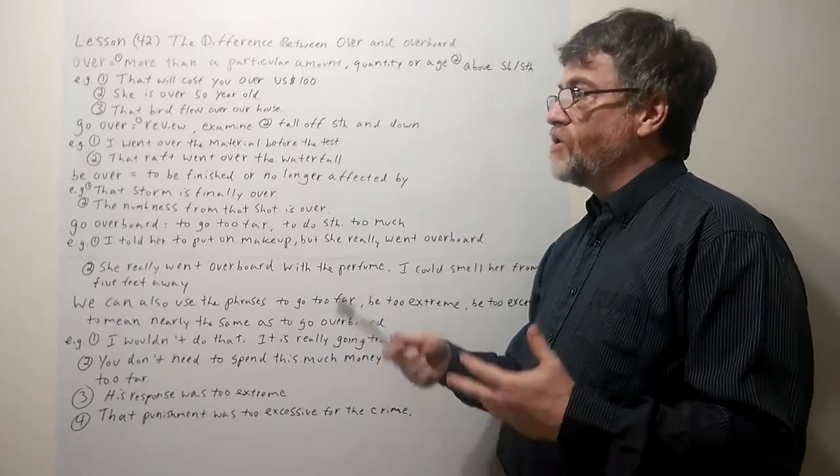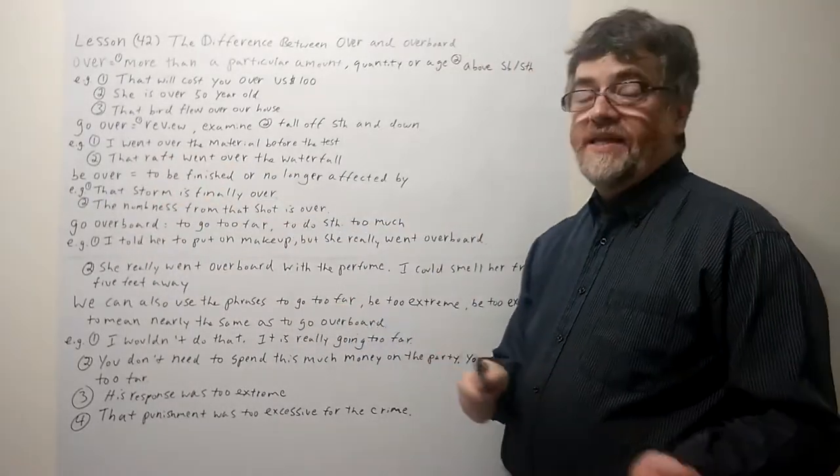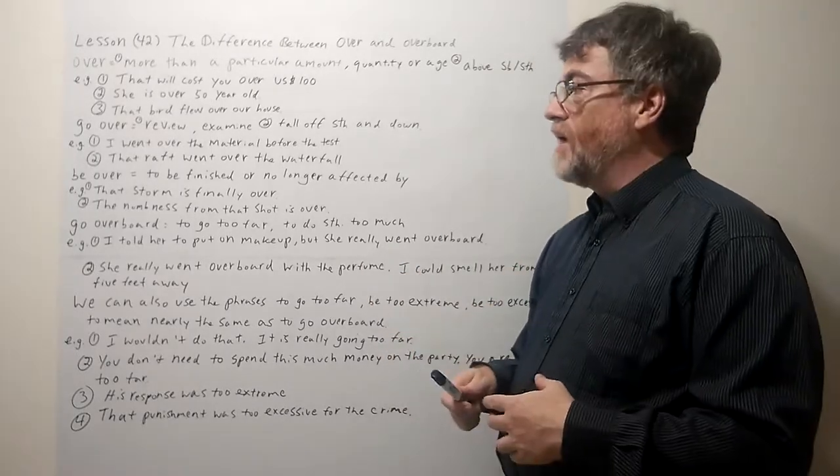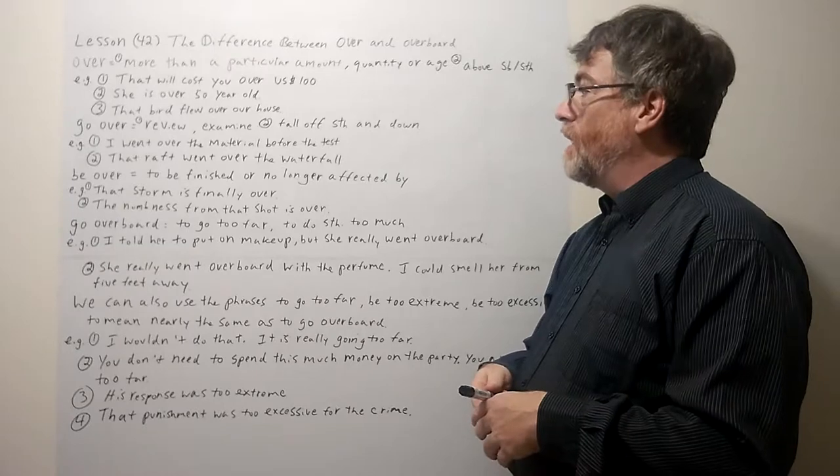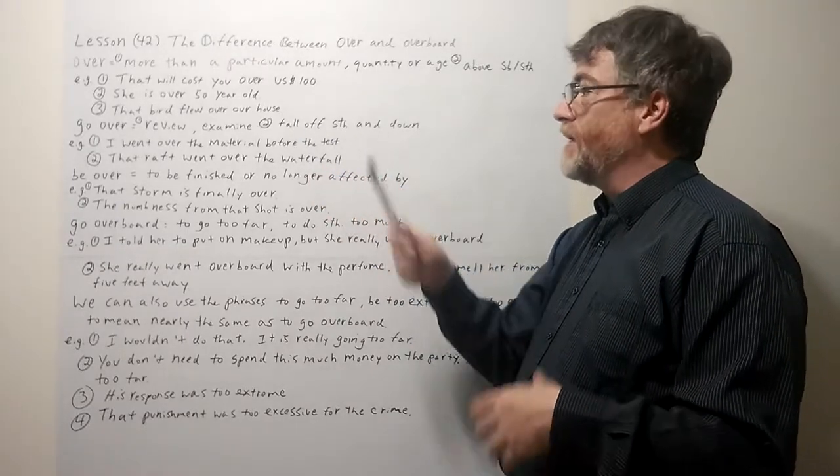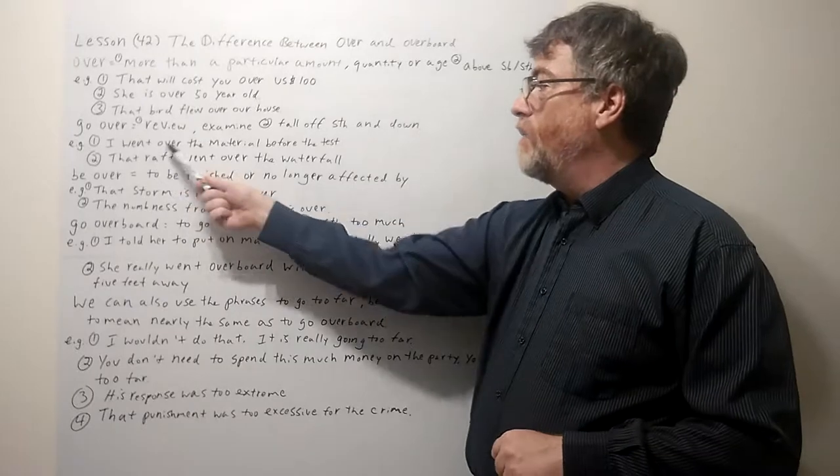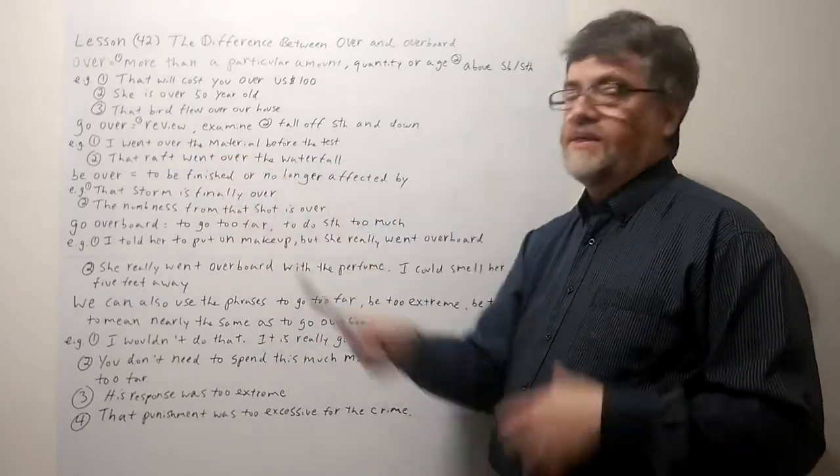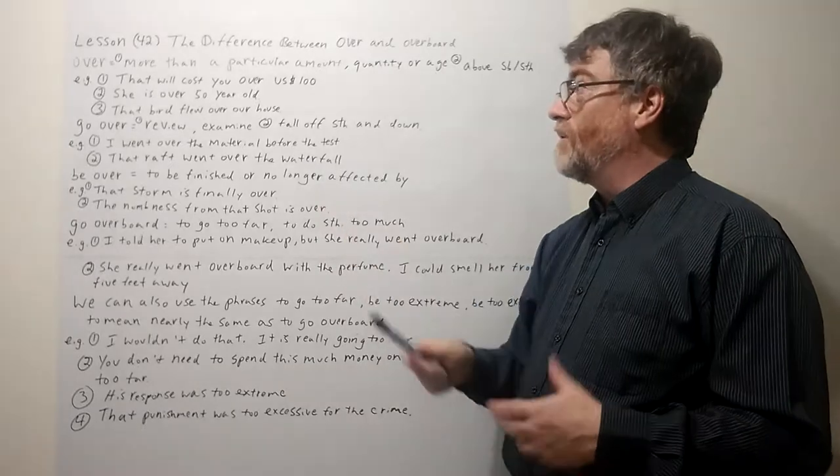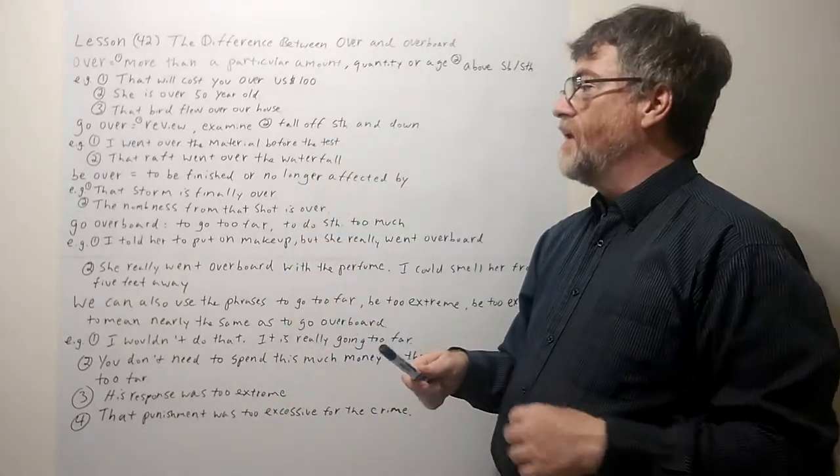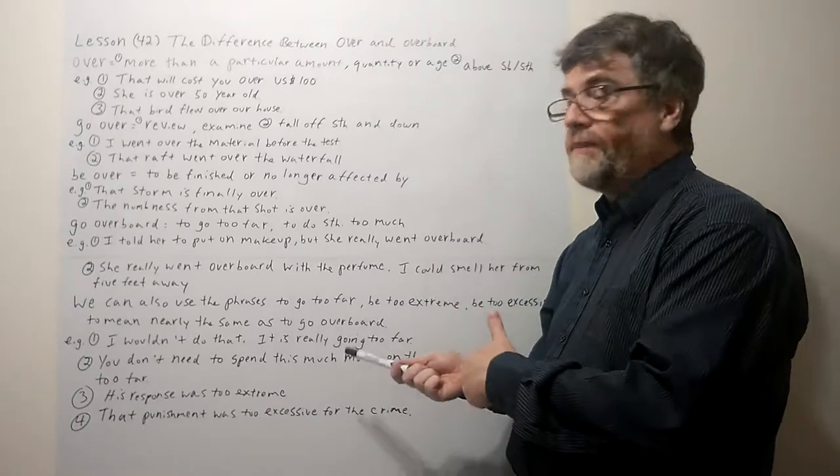Just a review here because students might say go over or be over when they mean that something goes overboard or something is overboard. Remember if we say to go over, it could mean to review or to examine something. It could mean to fall off something and then down. So if you just stop it over, it could have a very different meaning. Let's look at an example. I went over the material before the test. You reviewed it. You checked it. You examined it. That raft went over the waterfall. Again it means that it went and it fell off and fell down. So you have to be careful. You can't just say to go over when you really mean to go overboard.